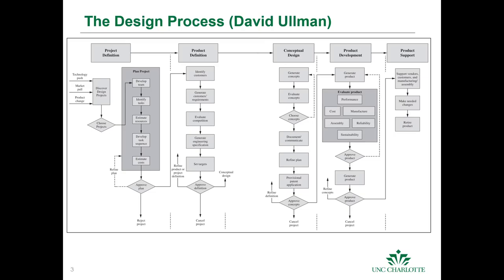When we talk about the design process, not everybody has the same picture, so I wanted to walk through it according to the more classical definitions. Looking at this, we can see the standard design process. Usually we start off with project definition — what do we want to accomplish — then it works into product definition, which is what we want to make to satisfy a problem, then we go through concept design, product development, and product support.